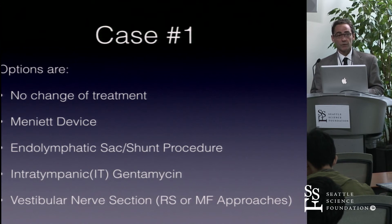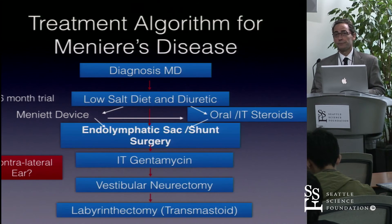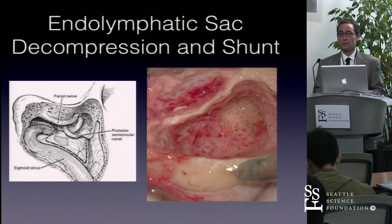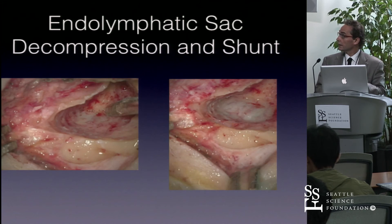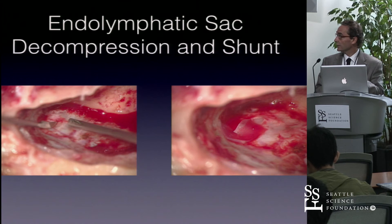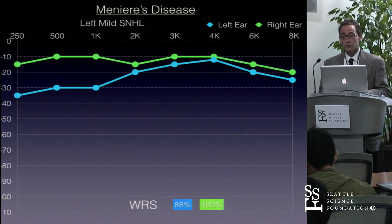At this time, options discussed included no change in treatment, the Meniett device, endolymphatic sac and shunt procedure, intratympanic gentamicin, or vestibular nerve section via retrosigmoid or middle fossa approach. The patient elected to proceed with endolymphatic sac decompression and shunt. A mastoidectomy of the left ear was performed, demonstrating the dural plate with bone removal, the vascular area along the sac, then incising the sac and placing a Silastic shunt. Some patients who have sac surgery will have improvement of hearing and discrimination, though not all.